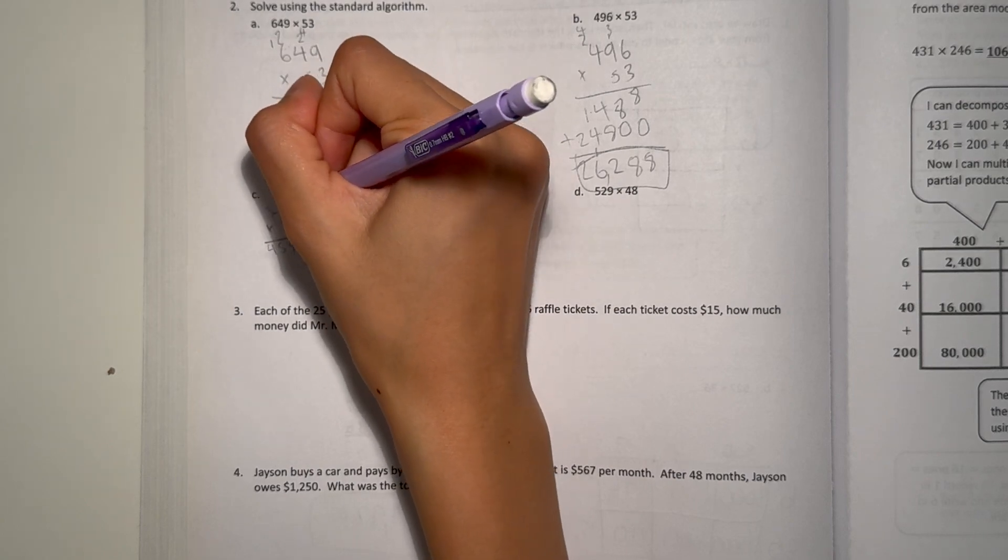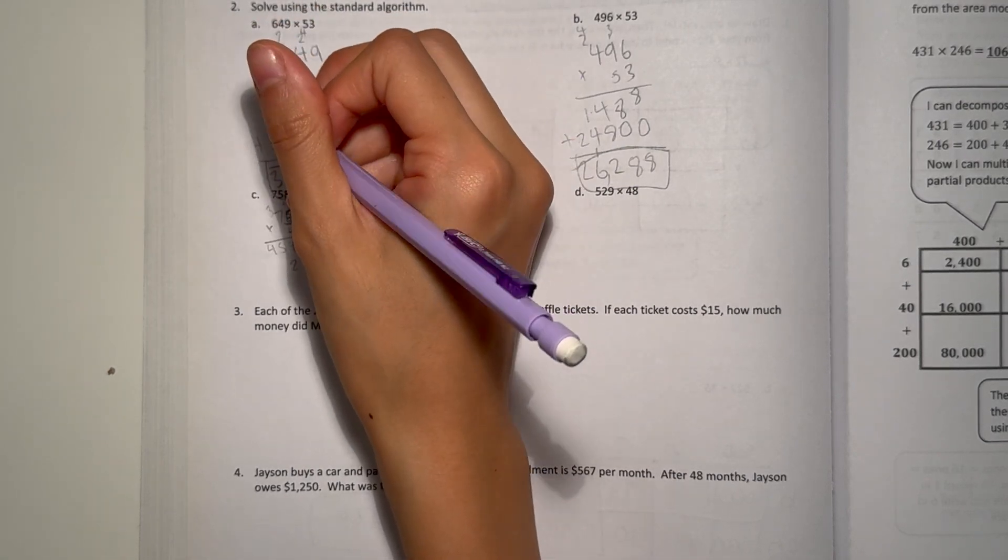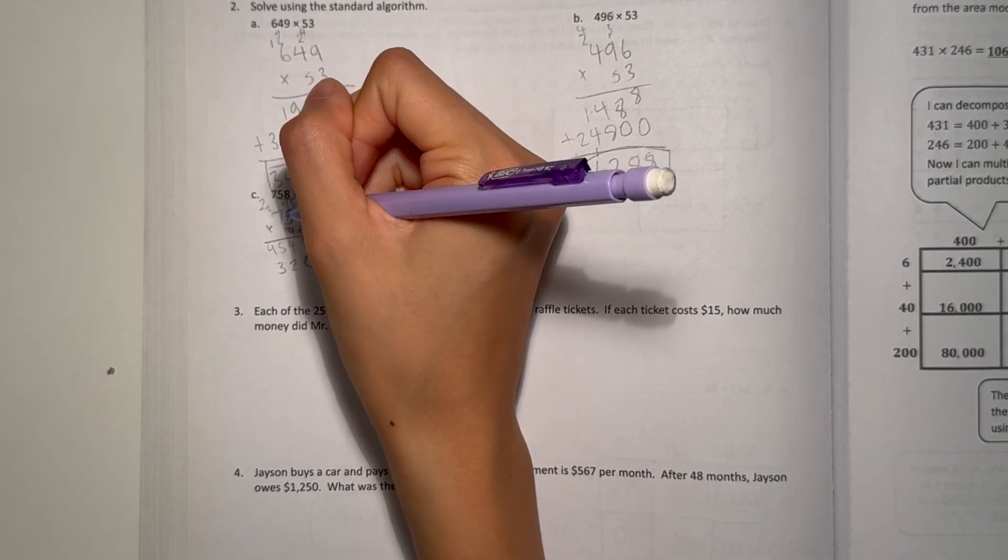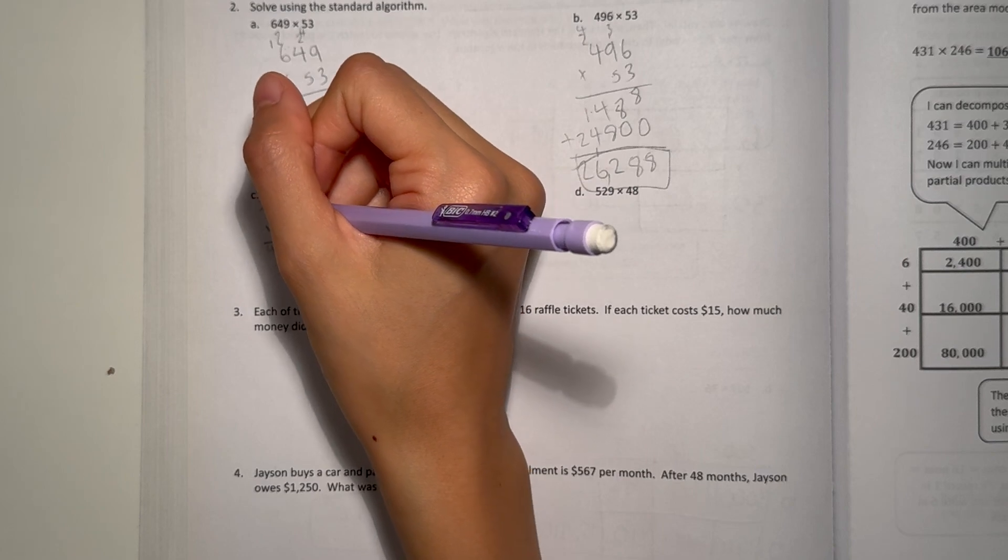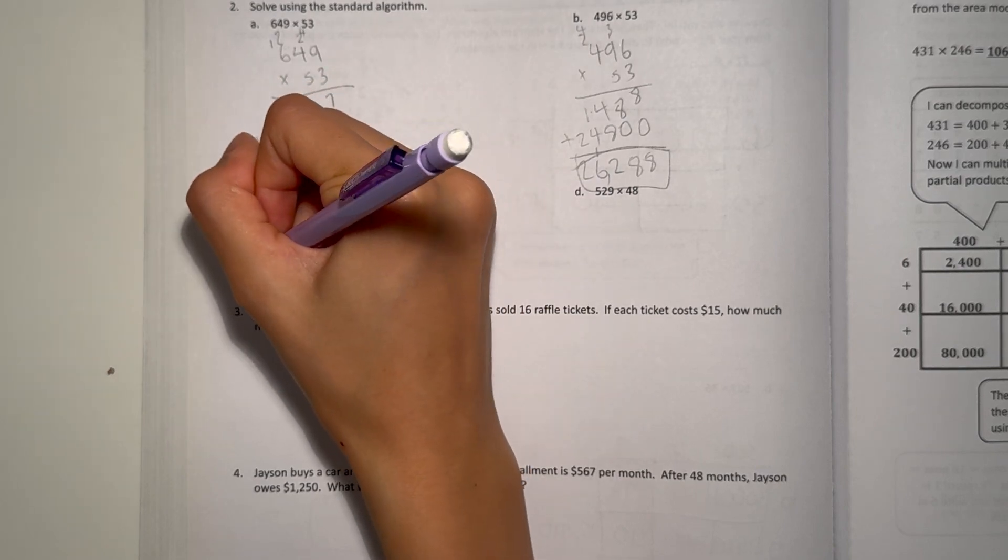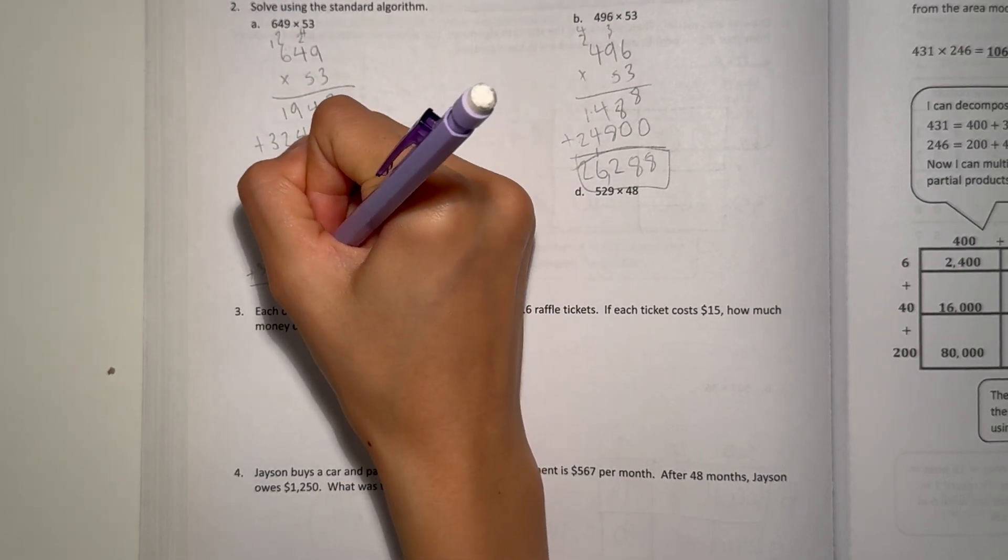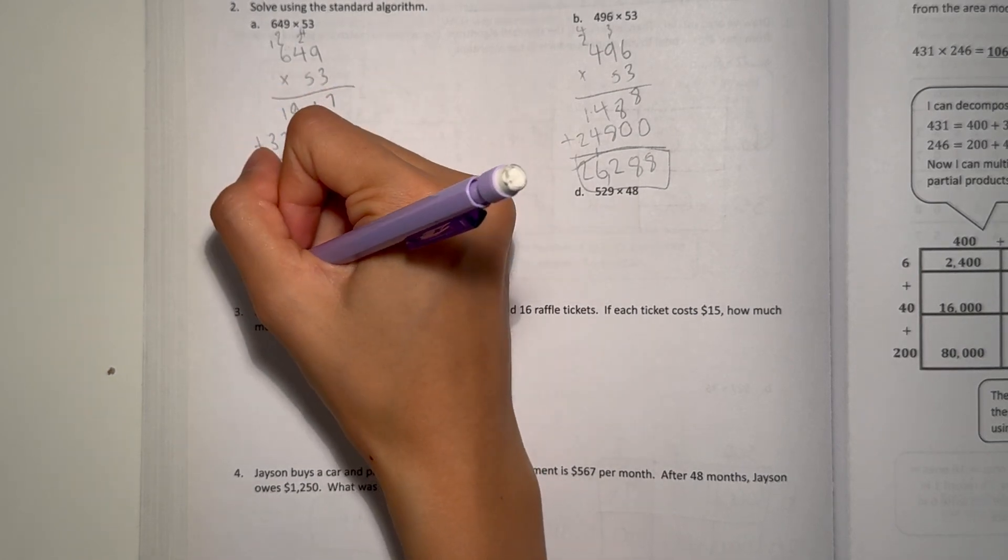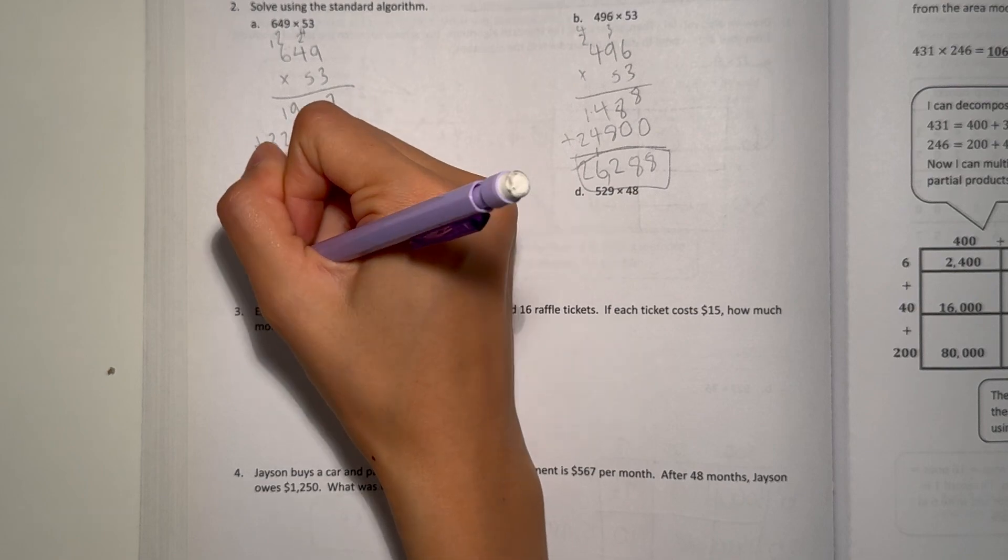Add a 0. 8 times 4 is 32. 5 times 4 is 20. Plus 3 is 23. 7 times 4 is 28. Plus 2 is 30. Let's add. 34,868.